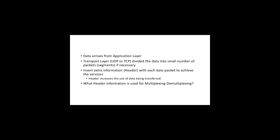Let's understand the data flow. Data arrives from different applications at the application layer. Whether we are using UDP or TCP, the data is divided into a small number of packets or segments if such division is necessary. For example, if we have around 100 bytes of data and divide it into 10 packets, each packet will contain 10 bytes of data.